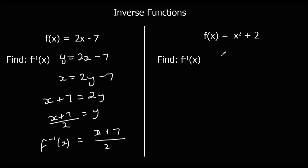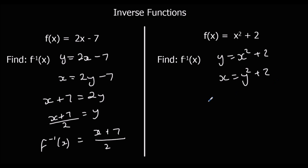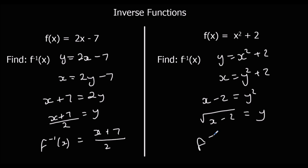For the second practice problem, we write it as y equals first, and then switch the x and y. Then we need to make y the subject again — take 2 from both sides first, and then square root both sides. So f⁻¹(x) is the square root of (x minus 2).